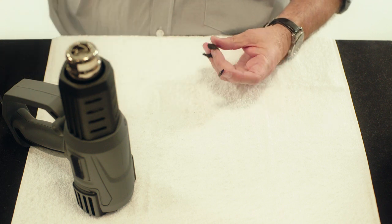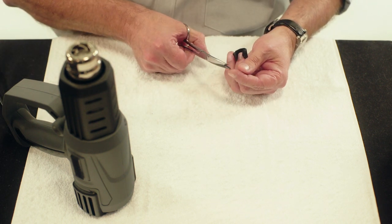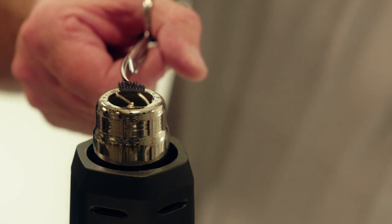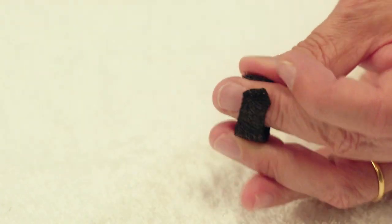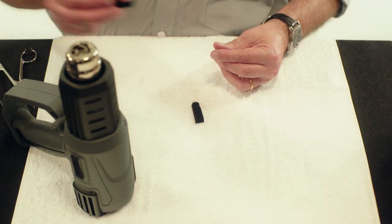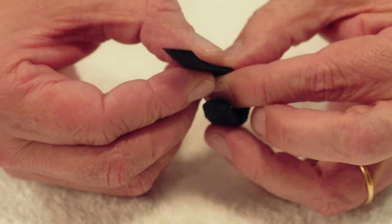heat gun. Heat the glue of the self-adhesive velcro hook and stick them both together. Heat the palmer side of the orthosis and attach a small piece of velcro loop.